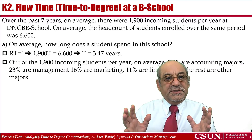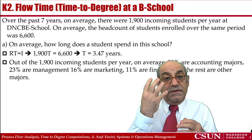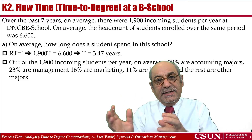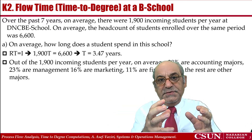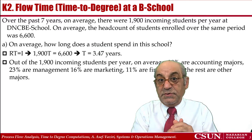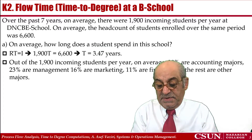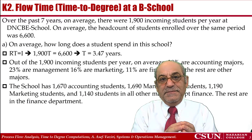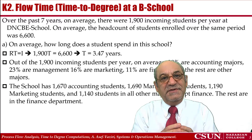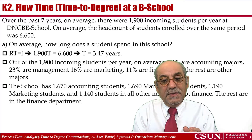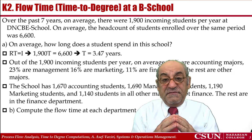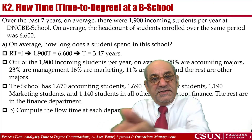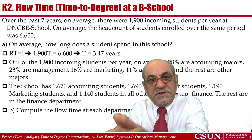Out of 1,900 incoming students, different percentages belong to different four major departments, and the rest belong to three other departments — we have a total of seven departments. We also have the headcount of each department. We want to compute the flow time of each department — the time a prototype student of each department spends in this college.